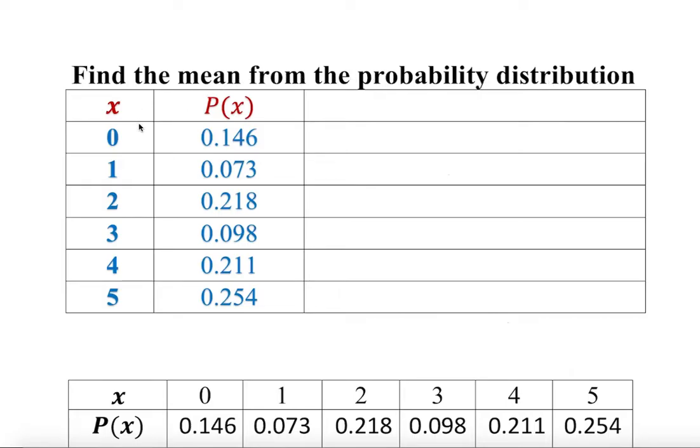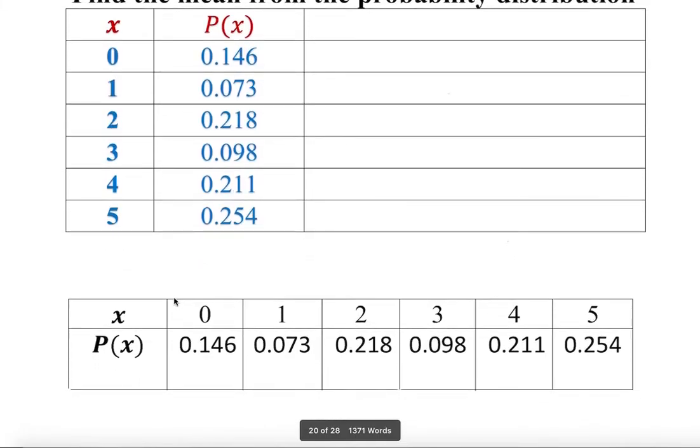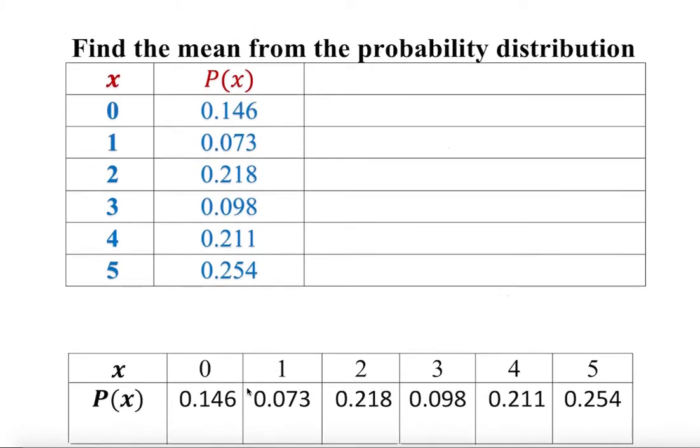This probability distribution table can be in vertical format or horizontal. As you see on the bottom, it can be horizontal or it can be vertical.